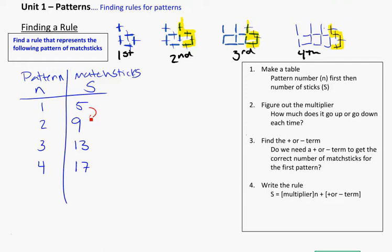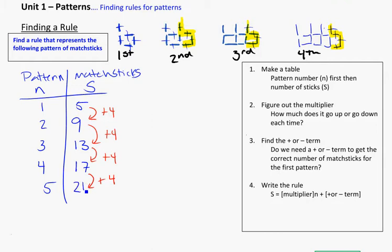What do you think would happen for the fifth pattern? If we're adding four on each time, for the fifth pattern we could go from seventeen, add the four new ones on, and we would get to twenty-one. So this helps us visualize what's happening. We can see the four new sticks added on each time, and in the table the number increases by four every single time. This is going to be the multiplier — how much it goes up or down each time. Each pattern has four new matchsticks on it.